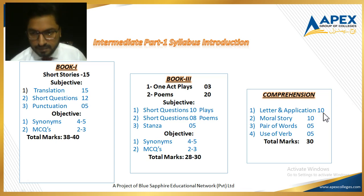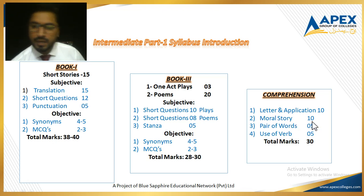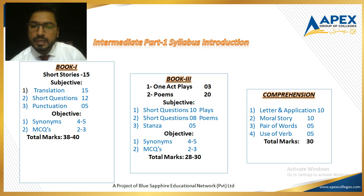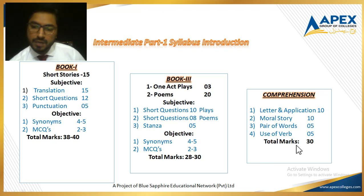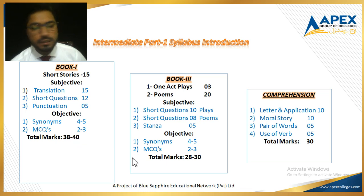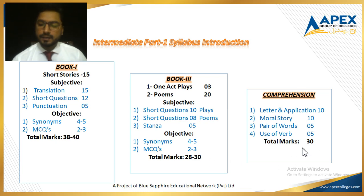Question two is moral story — also an old question you attempted in matriculation, of 10 marks. You will have two morals and you will write a story on any one appropriate moral. Question three is pair of words — you have also attempted this in matriculation, of five marks. Question four is use of words, also five marks in the objective part — it's all about tenses. Adding these 30 marks to the previous sum, the mega total is: 40 + 30 = 70, and 70 + 30 = 100.